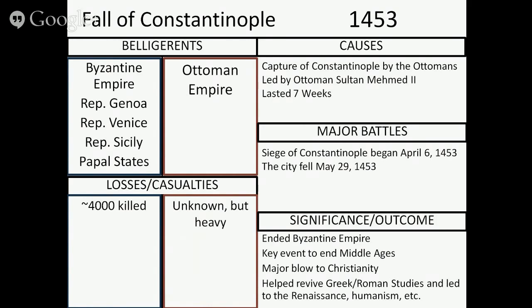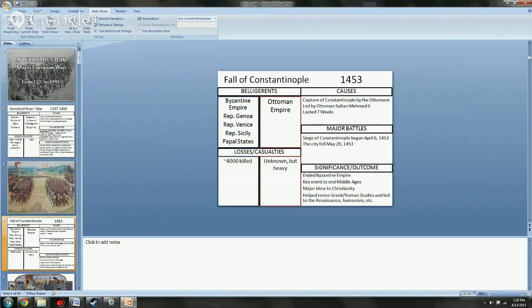A lot of historians view the Fall of Constantinople, similar to the Hundred Years War, as another key event that officially ends the Middle Ages. It was a major blow to Christianity, as Constantinople was viewed as a major city representative of the Christian faith. Interestingly, contrary to pop culture belief about radical versions of Islam today, the Muslims actually helped revive Greek and Roman studies in the mid-1400s. They preserved many ancient texts from the Greeks and Romans, and it's thanks in no small part to the Muslims of the 1400s that we have the information we have related to ancient Greece and Rome.